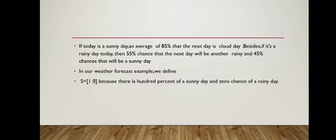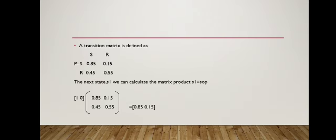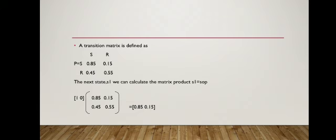In our weather forecast example, we define S equal to [1, 0], because there is a 100% chance of a sunny day and 0% chance of a rainy day. A transition matrix P is defined as: S and R — 0.85, 0.15, 0.45, 0.55.